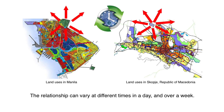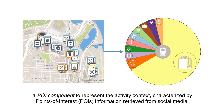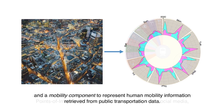The relationship can vary at different times in a day and over a week. To reveal such relationship, we design POI Mobility Signature, which mainly consists of a POI component to represent the activity context, characterized by points of interest information retrieved from social media, and a Mobility component to represent human mobility information retrieved from public transportation data.